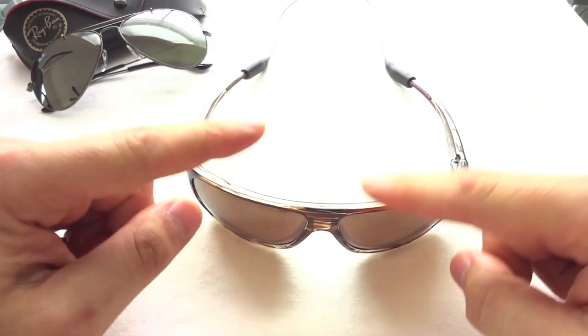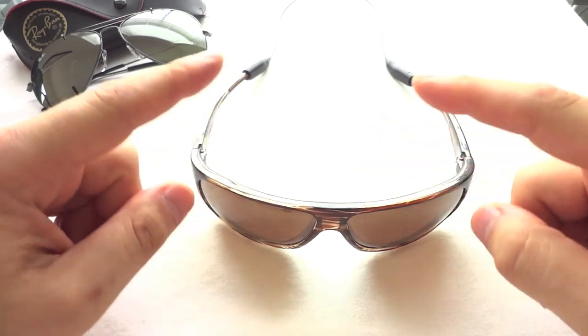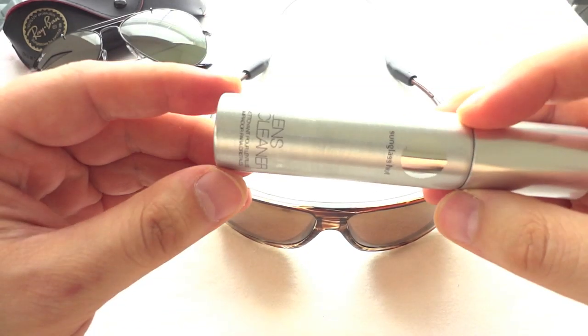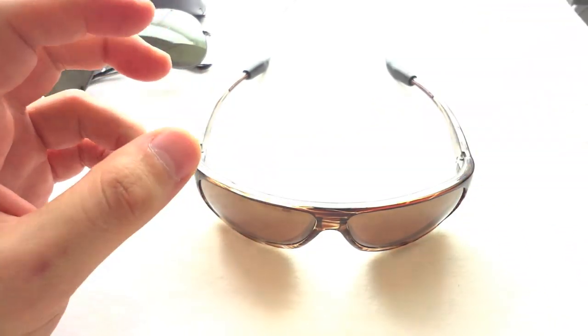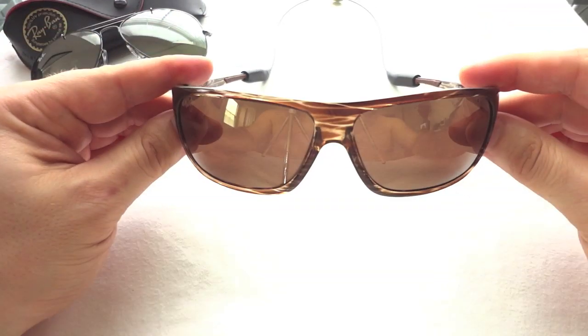But one thing I should really mention: when you're cleaning your lenses, do not use some weird solution. Get like a glass cleaner, this lens cleaner, whatever it is. Don't use your Windex—there are coats on the glass so you're going to mess those up.